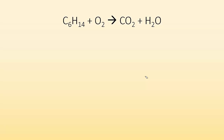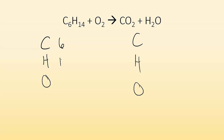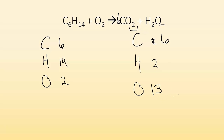Let's take a look at another one: C6H14 plus O2 gives me CO2 and H2O. Create inventory: C, H, and O on both sides. Reactants — six carbons, 14 hydrogens, two oxygens. Products — one carbon, two hydrogens, three oxygens total (two here and one there). Pick one thing at a time to balance — starting with carbons. Put a six in front of CO2; now I have six carbons. I've also changed the oxygens: 12 plus one gives me 13 oxygens. Now balance hydrogens: 14 on the left, two on the right, so put a seven in front of H2O. Now I have 14 hydrogens, but oxygens become 12 plus seven — I have 19 oxygens.